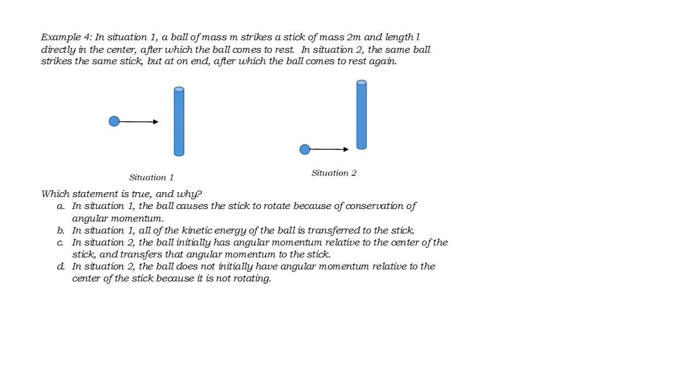In example four we're shown two situations. One in which a ball strikes a rod right at the center of mass, a second one where it hits the rod on the end. The correct answer to this question is choice C. The ball initially has an angular momentum in situation two relative to the center of mass. So here's the center of mass. If I draw a vector this way, that's my position vector. Here's the velocity vector.